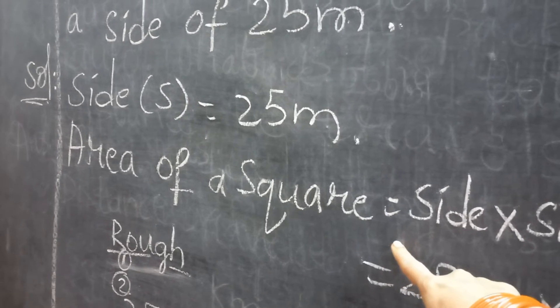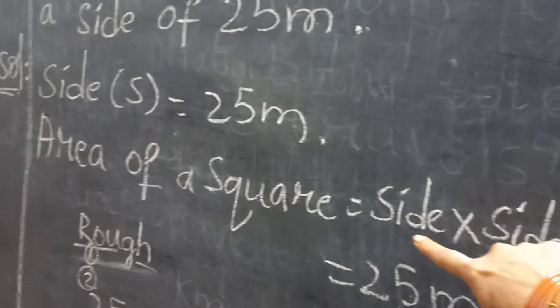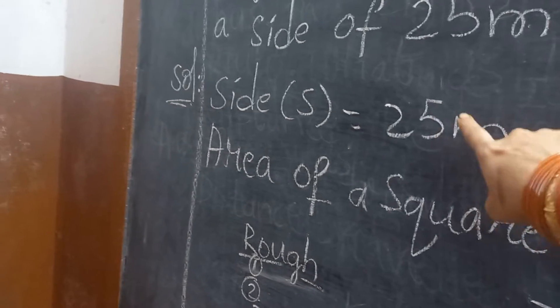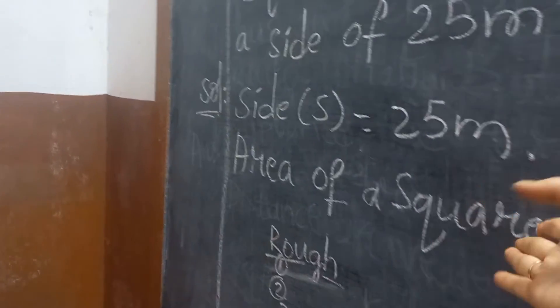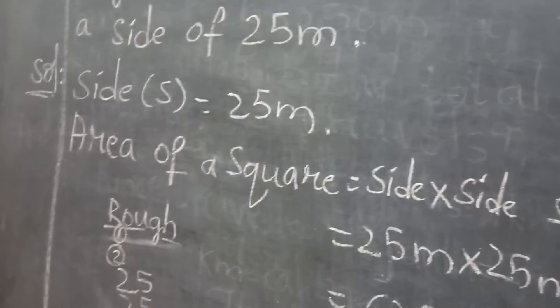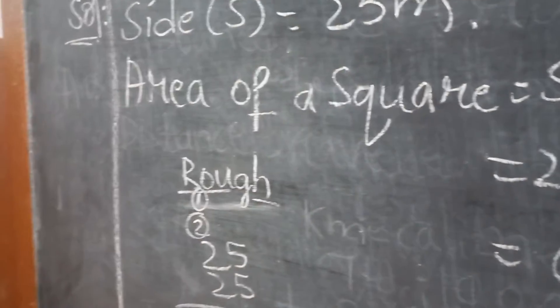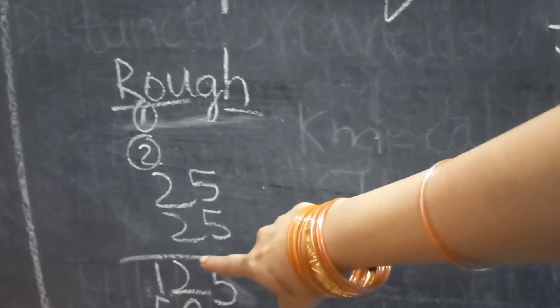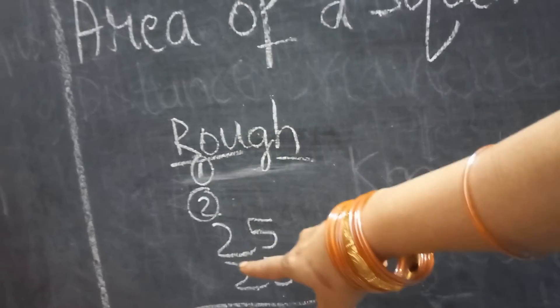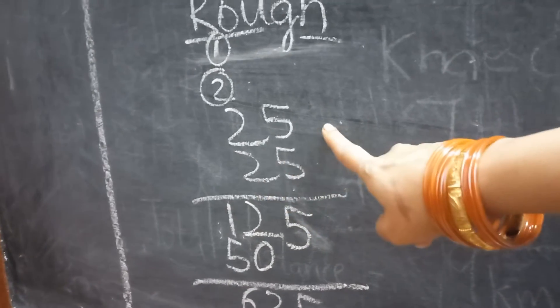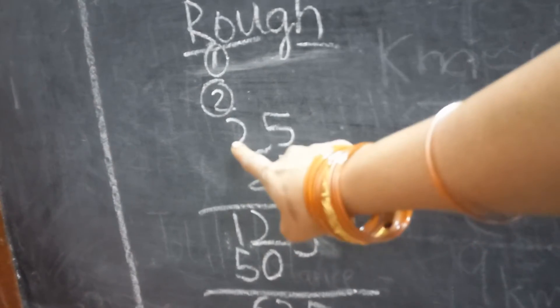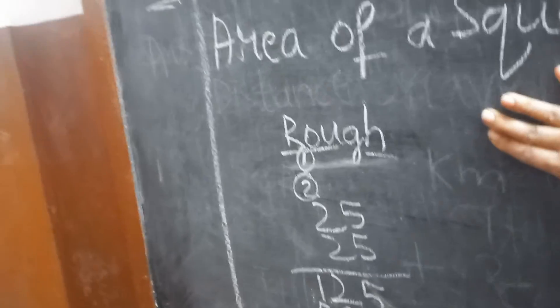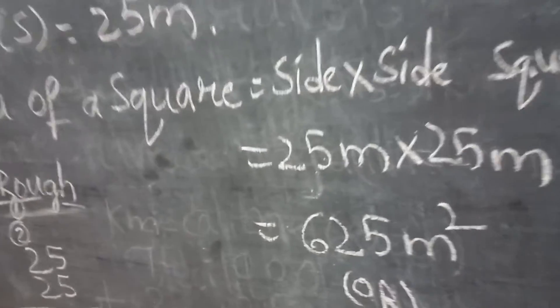Area of the square, we have to write here. Side into side square units. What is the side? Side we know 25 centimeters. So, wherever side is there, we are supposed to write 25 meters. Because side is equal to 25 meters. So, 25 into 25. See here rough work I have done for you. 25, 25, 5 fives are 25, 2 carry 5 down. 2 fives are 10, 10 plus 2, 12. 2 fives are 10, 1 carry here 0. 2 twos are 4, 4 plus 1 is 5. Now, we add here 5, 5, 2 plus 0, 2, 5 plus 1, 6. So, 625.